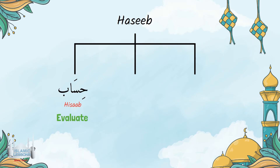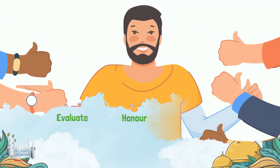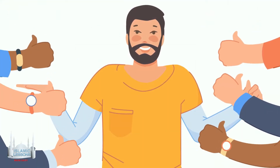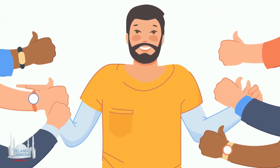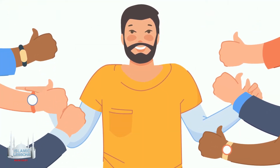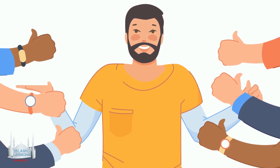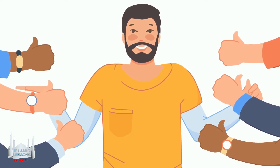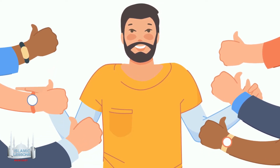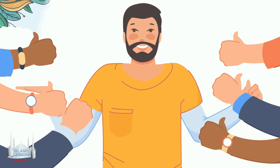Hasib can also be derived from the word hasab, and this word is used for honour and dignity that someone has. For example, a person might have honour and dignity because of what family they come from, or because of the status they hold in a society and so on.